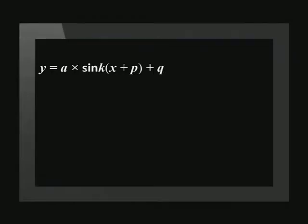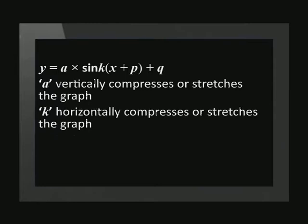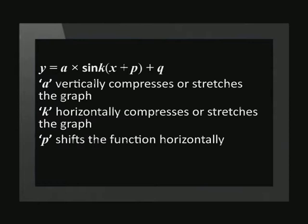In the formula y equals a times sine k into brackets x plus p plus q: a vertically compresses or stretches the graph, k horizontally compresses or stretches the graph, p shifts the function horizontally, and q shifts the function vertically.